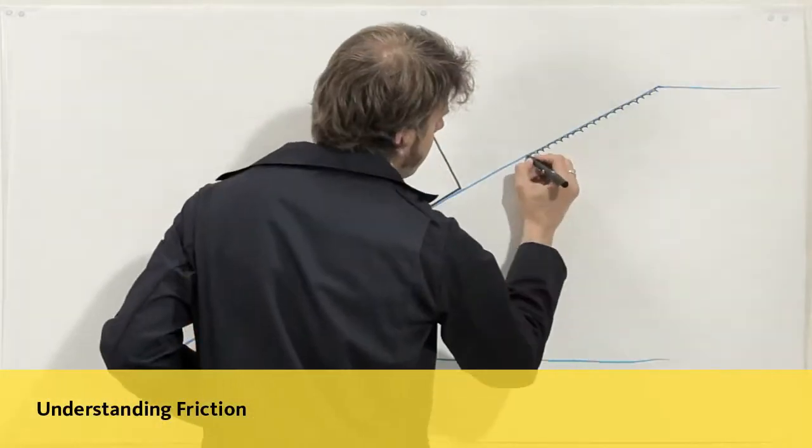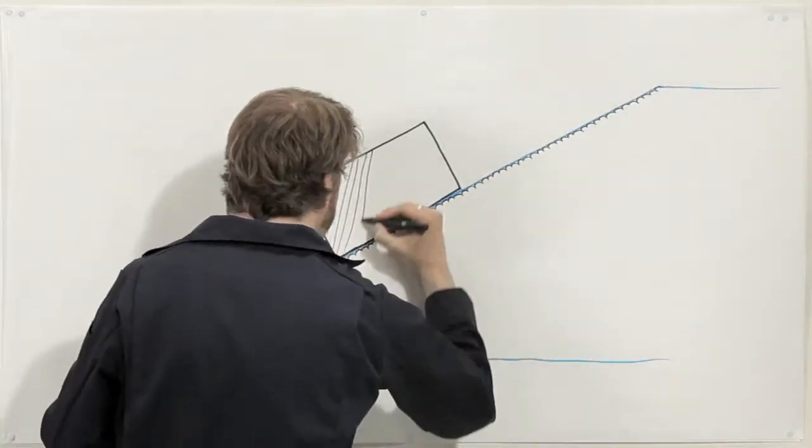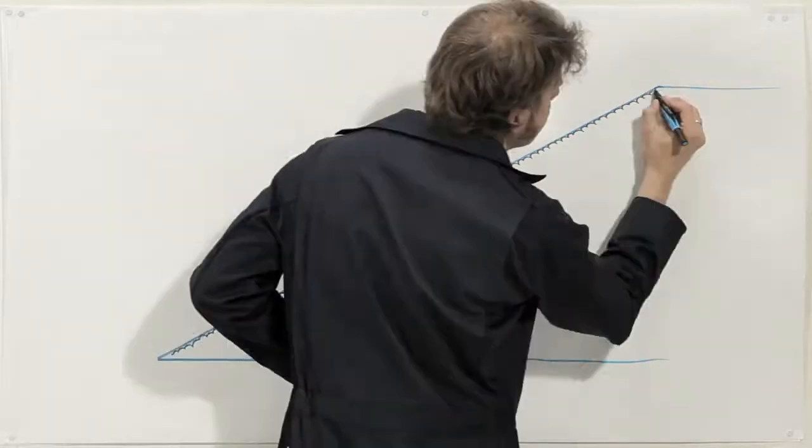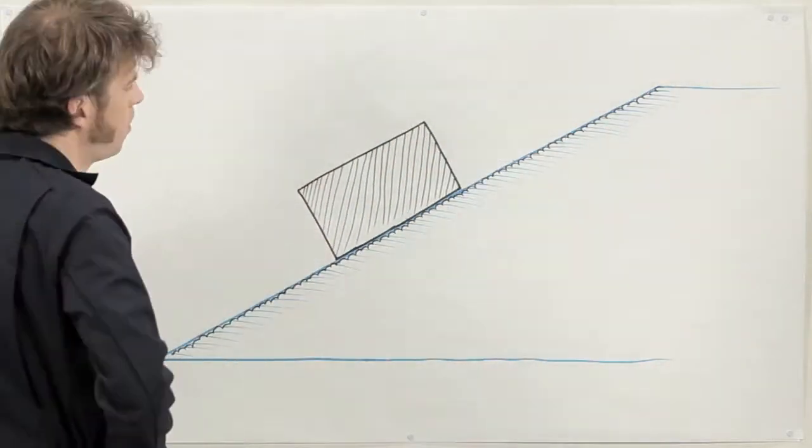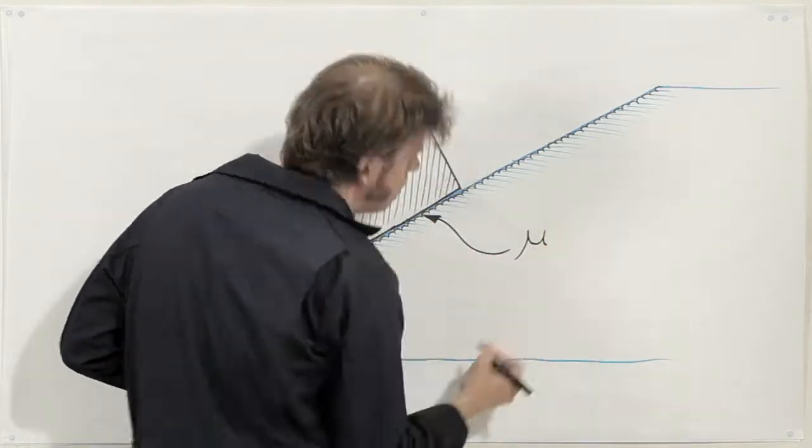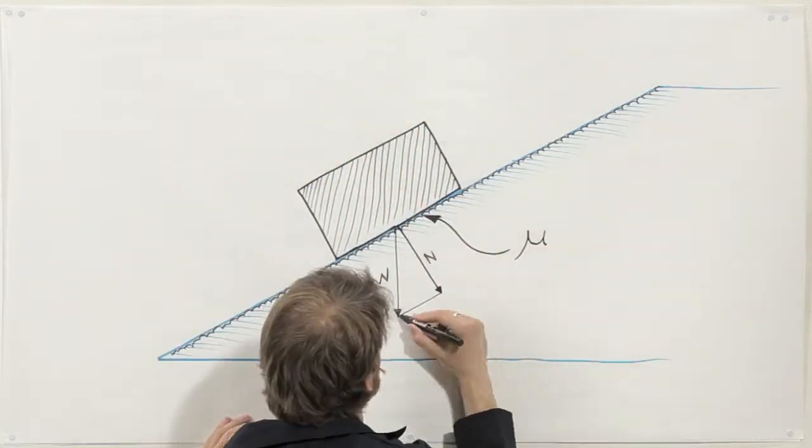Friction depends on the roughness of the surfaces in contact, the materials themselves, and on whether the object is at rest or in motion. This is quantified as the coefficient of friction, mu. The higher the number, the more resistance.